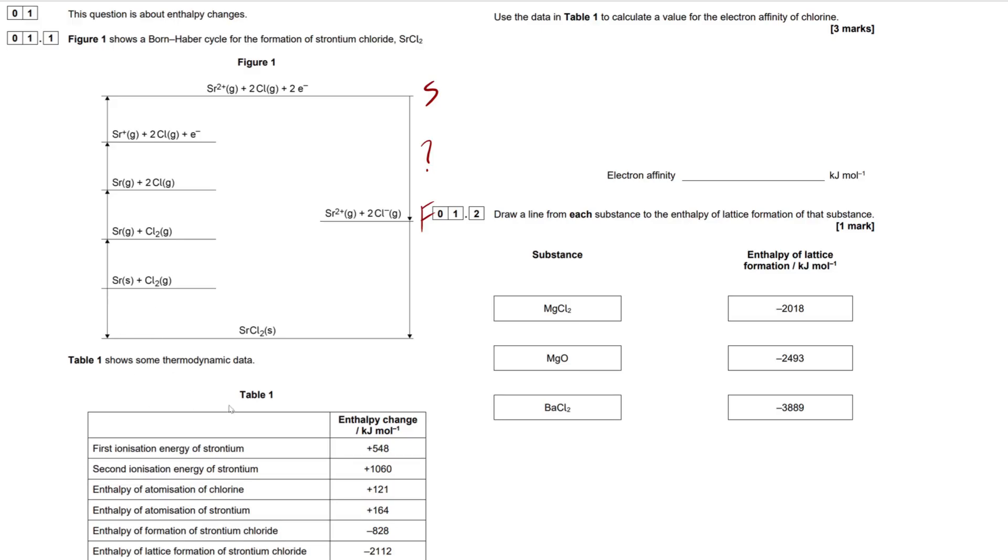This one right here is going to be real easy. It's going to be our exothermic value of the enthalpy of formation. Standard state elements forming this compound right here. So, this is going to be minus 828. I'm just going to tick that off. This right here is going to be our lattice formation. We're going from gaseous ions into an ionic compound, a solid ionic lattice. Tick that off the table as well, just so we keep track of it. Next one is going to go from a solid strontium into a gaseous strontium. Therefore, it's our atomization. So, that's our plus 164 right there. Tick that off as well.